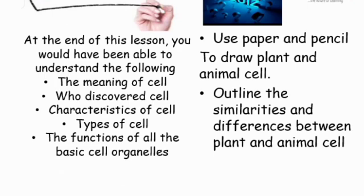Summary: At the end of this lesson, you would have been able to understand the following. Number one, the meaning of cell. Number two, who discovered cell. Number three, the characteristics of cell. Number four, types of cell. Number five, the function of all basic organelles. Lastly, this is a quiz which you are required to solve and send your inquiries or comments to jimmasmith at edifice.ng. Thank you.